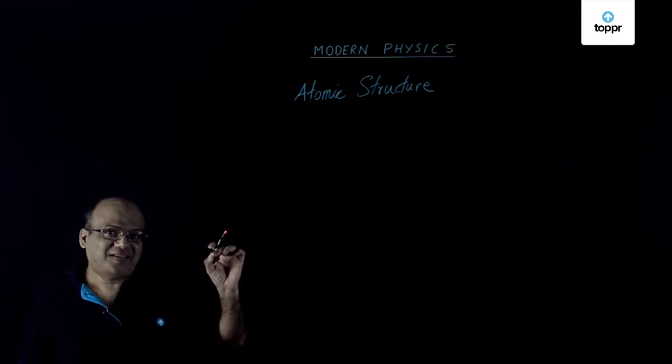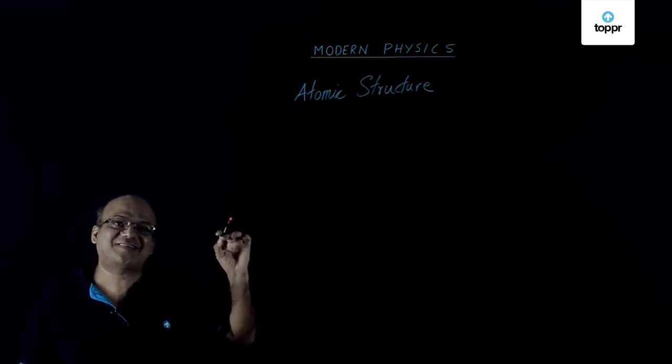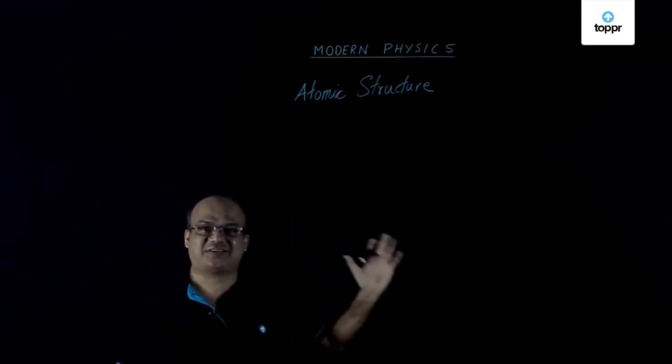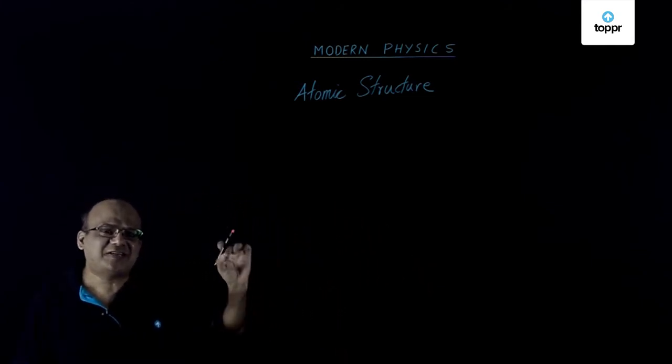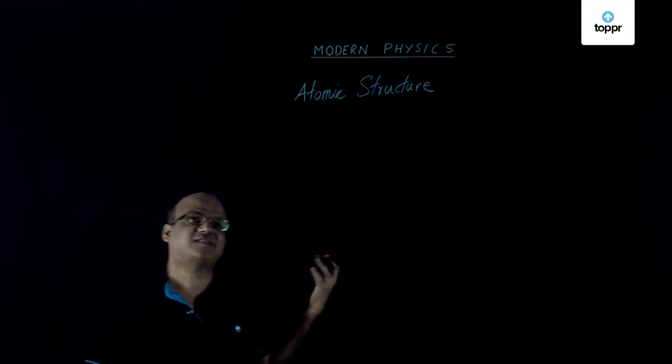Now, in this lesson we are going to start a discussion on atomic structure. Sir J.J. Thompson discovered the electron in 1897.